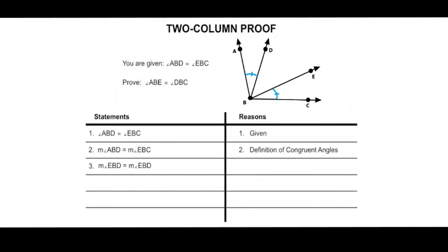For statement three, the measure of angle EBD is equal to the measure of angle EBD. Remember that if something equals itself, that is the reflexive property of equality. So reason number three is the reflexive property of equality.